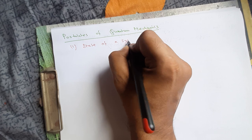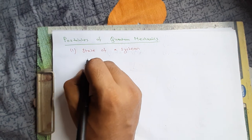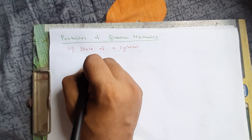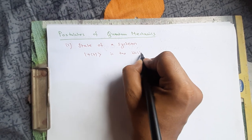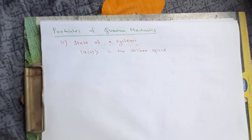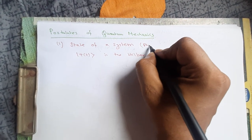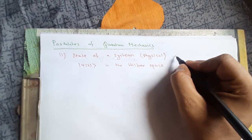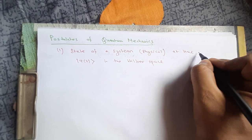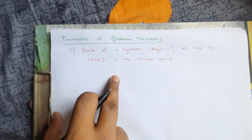The first postulate is the state of a system. Any physical system at a given time t can be represented as a wave function, or state, ψ(t) in the Hilbert space. This is the first postulate.